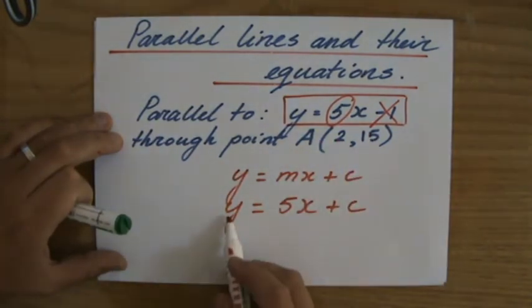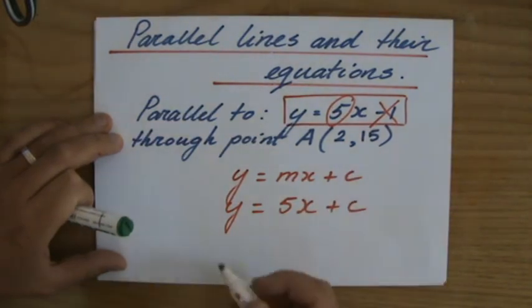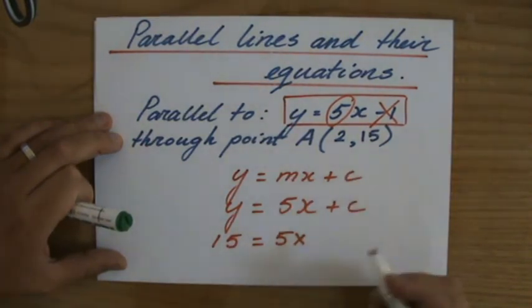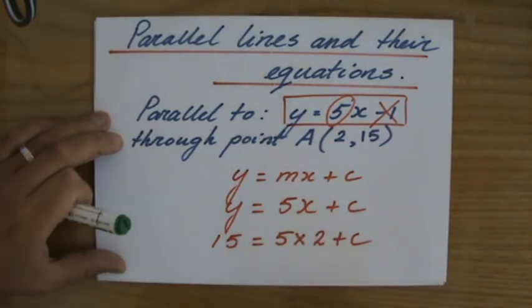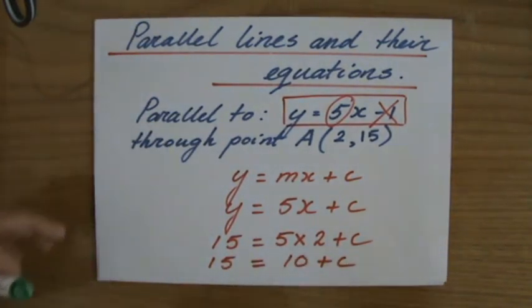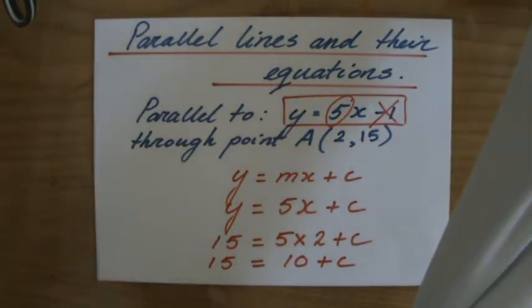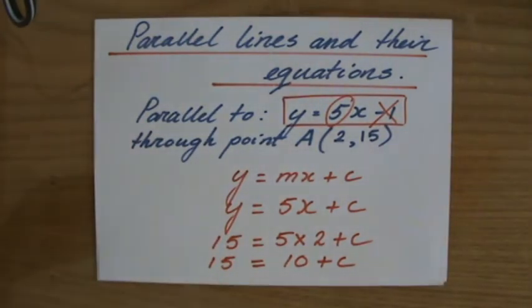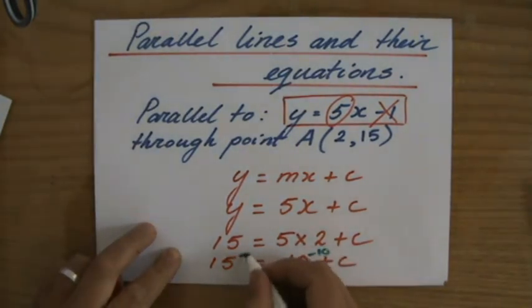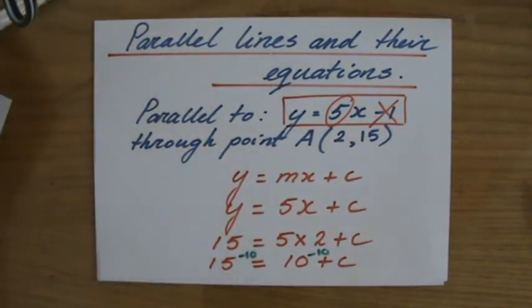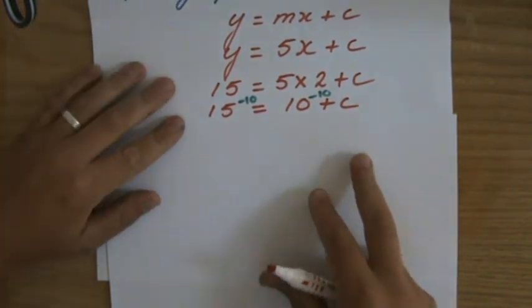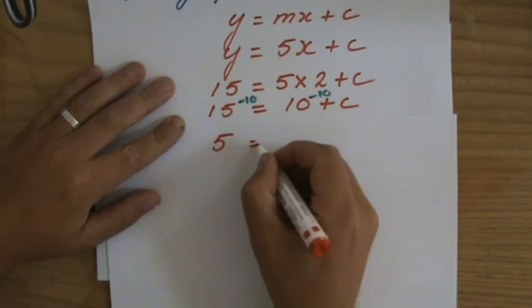Point A is (2, 15). So what is y? Looking at point A, y is 15. So 15 equals 5 times x, and x is 2, plus c. So 15 equals 5 times 2, which equals 10 plus c. I'm rearranging to find what c is. To isolate c, I have to subtract 10 from both sides. So minus 10 on both sides gives me 5 equals c.